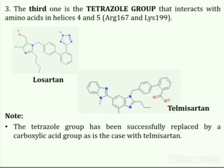This tetrazole group has been successfully replaced by a carboxylic acid group, as in the case with telmisartan. The following points suggest that these 3 important pharmacophores are essential for the receptor binding of angiotensin receptor blockers. However, the tetrazole ring system can be replaced with an acidic moiety such as carboxylic acid.